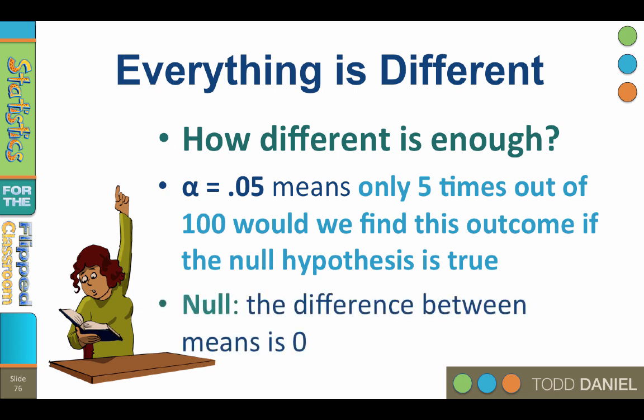Remember, we start with an assumption, the null hypothesis, that the differences between two means is zero. But if we do a t-test and the results that we observe were so unlikely that only one time out of 20 would we find these differences by chance, then we say that the differences are statistically significantly different. The probability of getting a difference as extreme or more extreme than the difference that we observed is five percent.